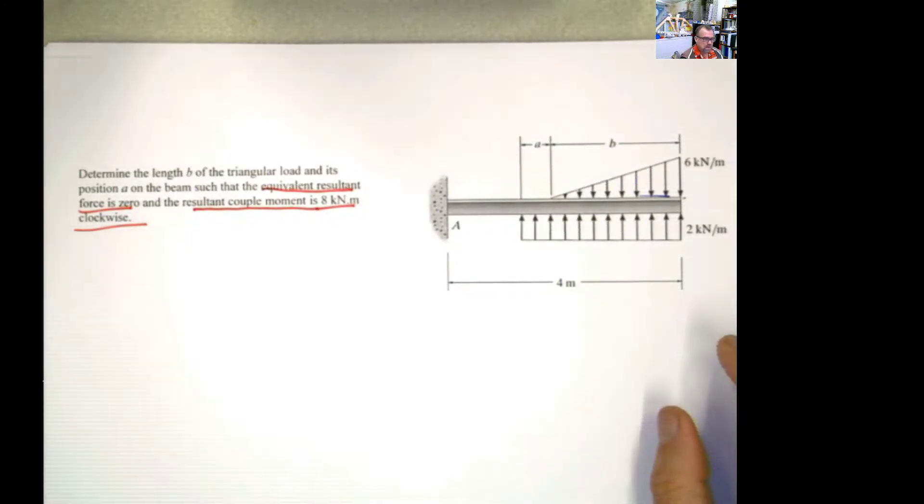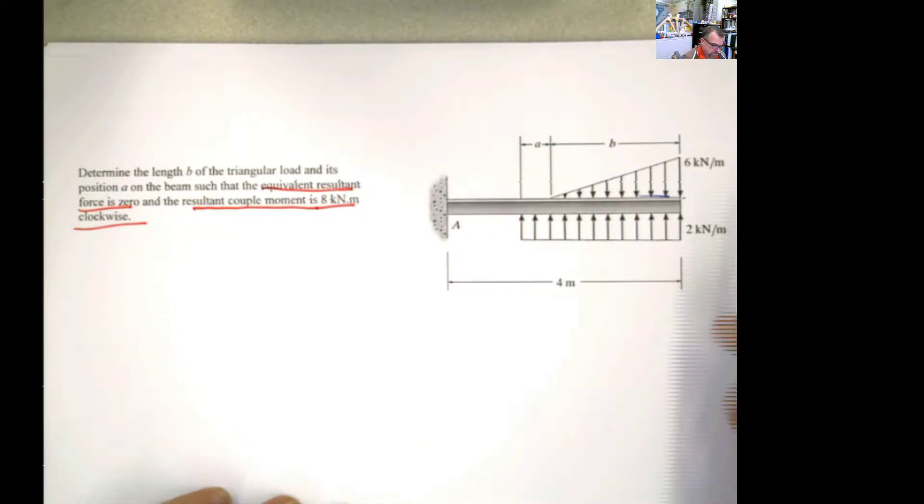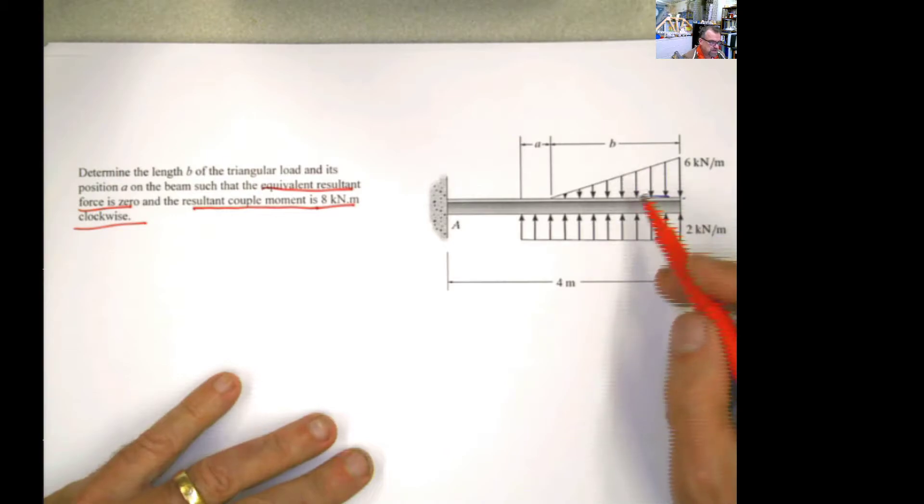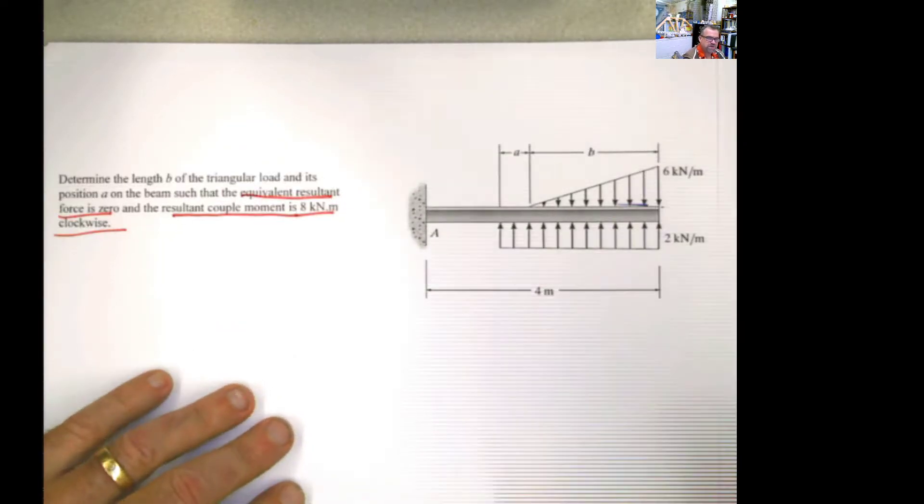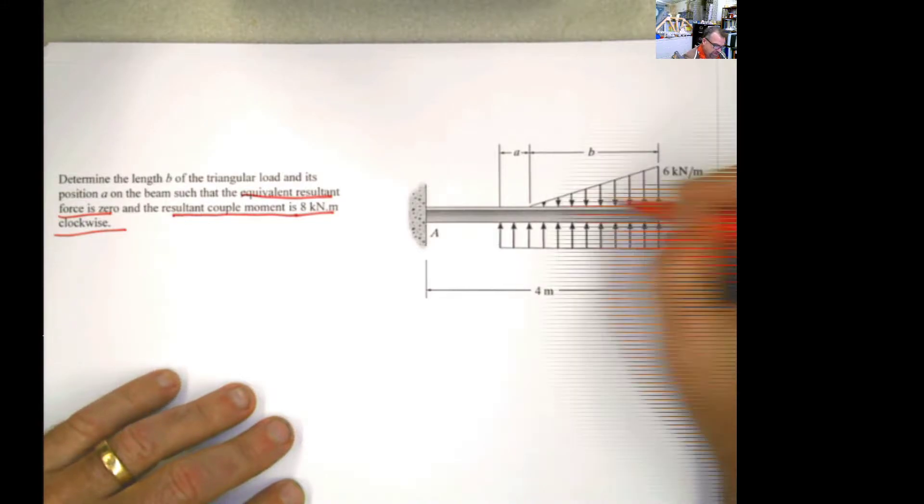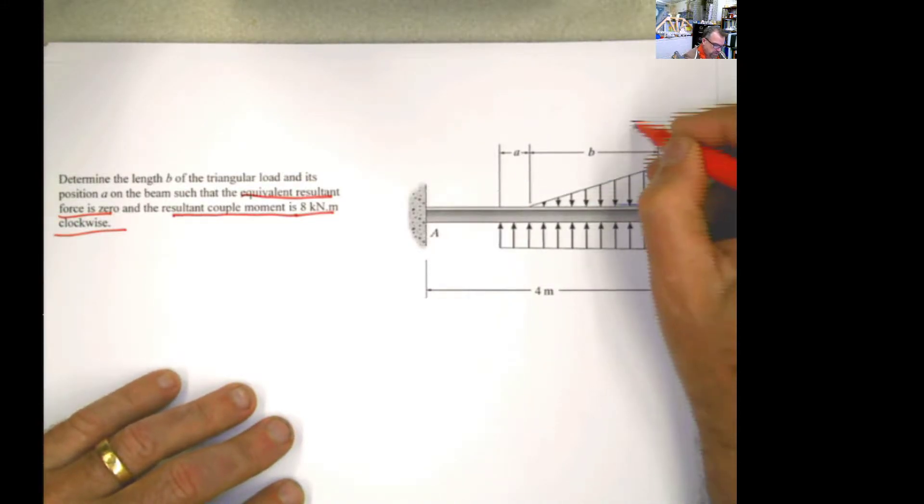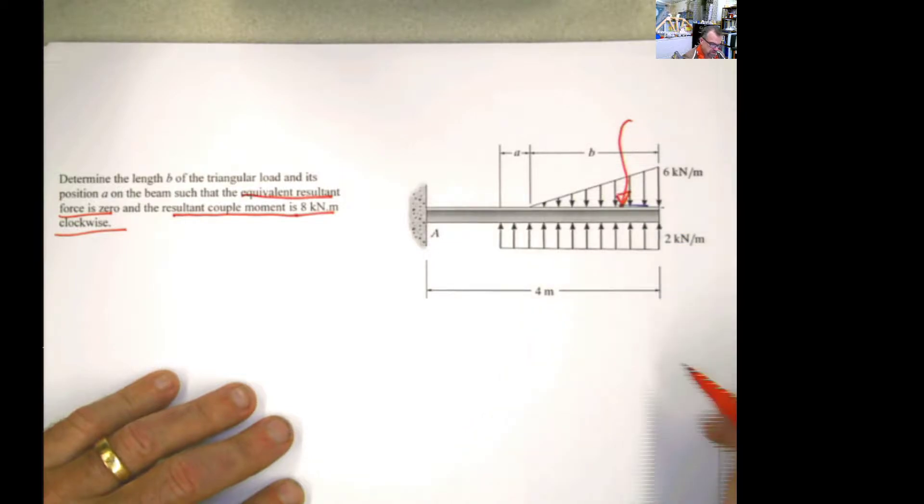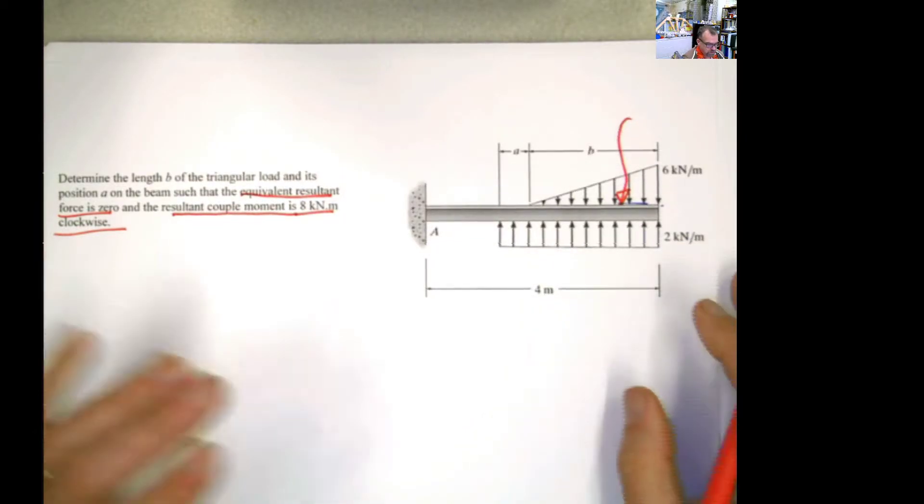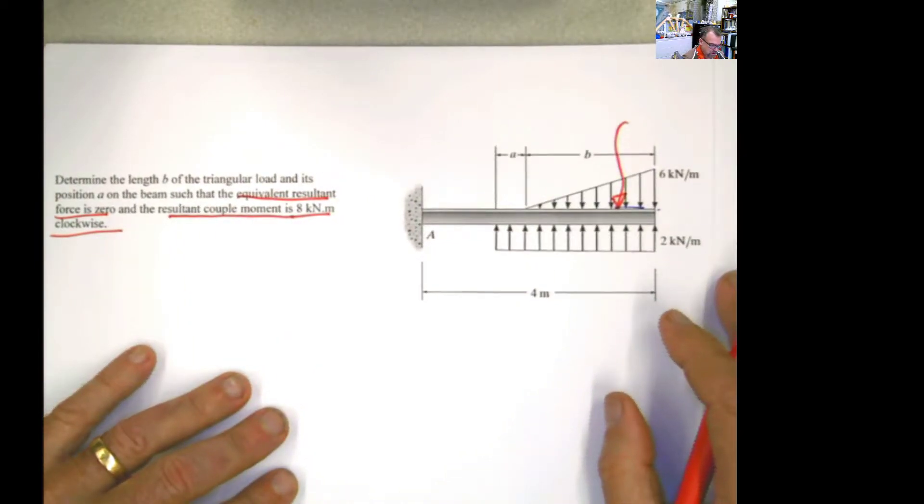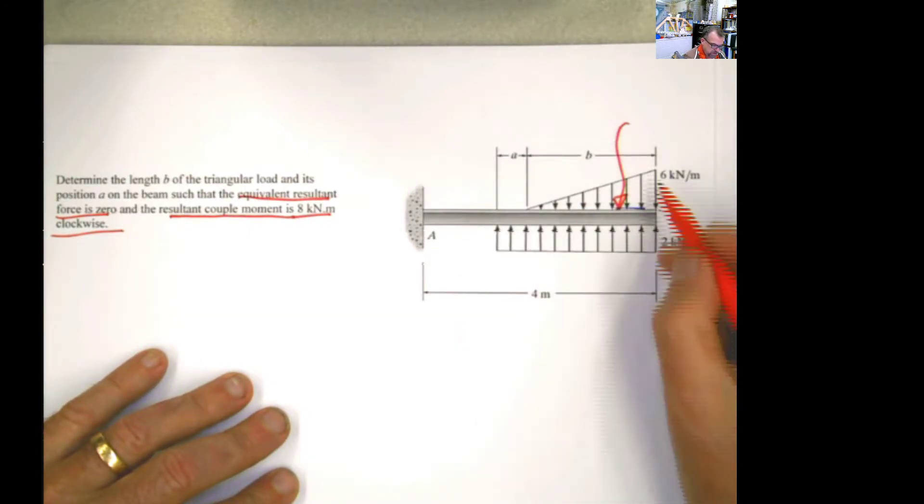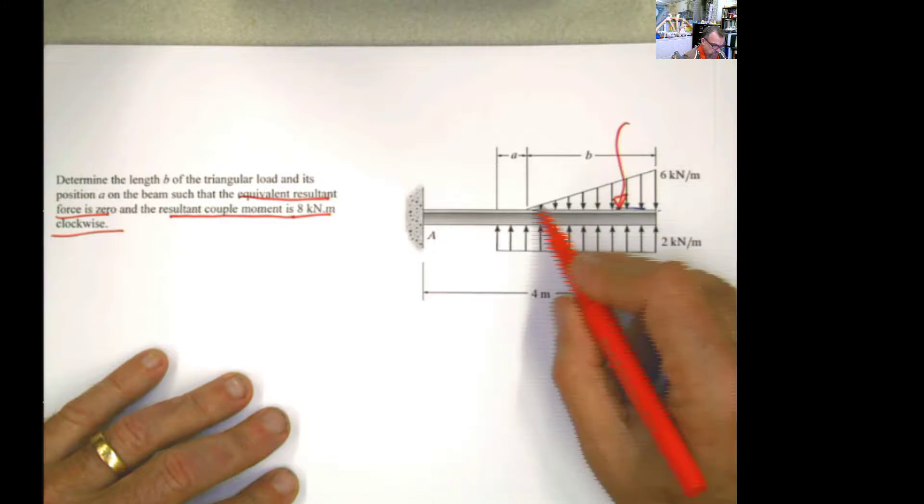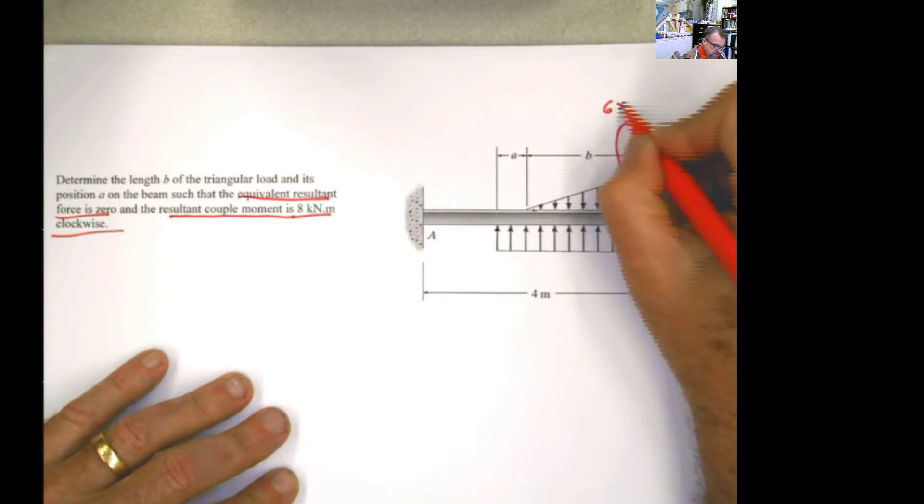The first thing that you do, as always, whenever you have a distributed load, is you have to convert the distributed load into an equivalent concentrated load, which is just the area of the shape. And in this case, the area is a triangle. So it's going to be b times 6, or 6 times b divided by 2, which is 3b.